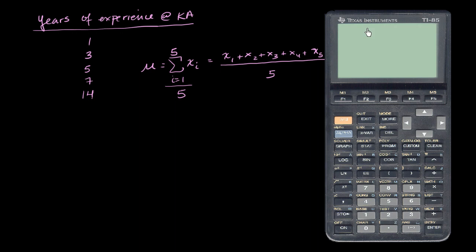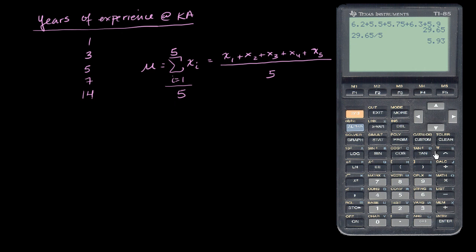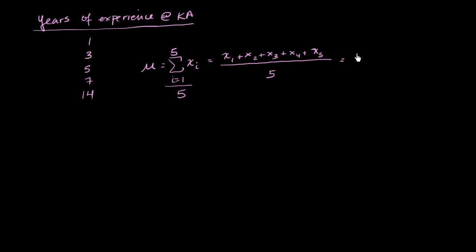Let me get the calculator out. I'm going to add them all up: 1 plus 3 plus 5 plus 7 plus 14 — that's five data points — and divide by 5. And I get 6. So the population mean for years of experience at my organization is 6 years.